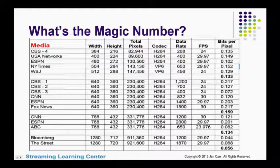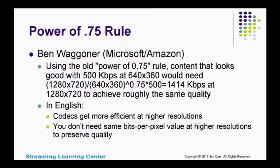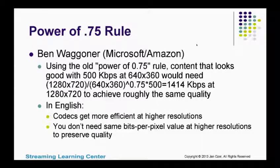Looking at the frame rate column, none of the media companies are dropping the frame rate — they're all producing at the native frame rate, either 24 frames per second or 29.97/30. Ben Wagner — a very well-known compressionist who worked for Microsoft and now works for Amazon — talks about the PowerPoint 75 rule. It's a mathematical formula showing that your data rate needs on a per-pixel basis go down as your resolutions go up. In other words, codecs get more efficient at higher resolutions, so you don't need the same bits per pixel value at higher resolutions to preserve quality.